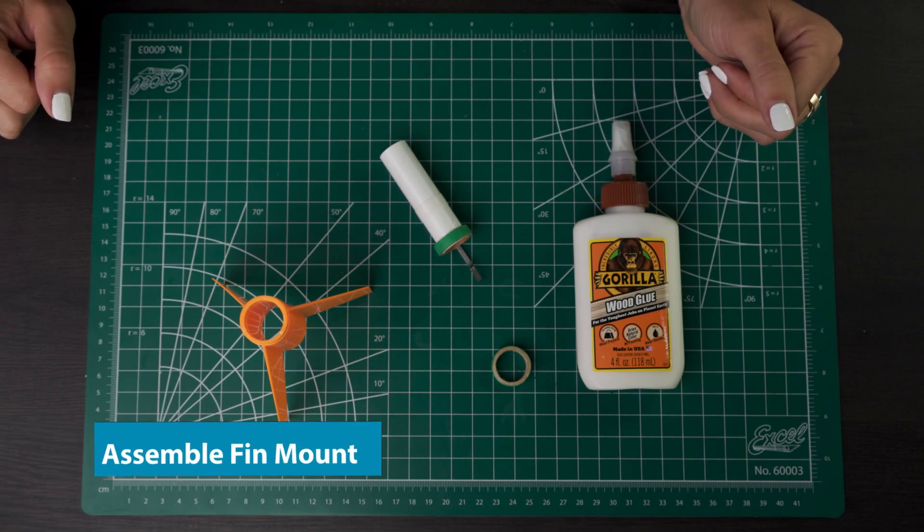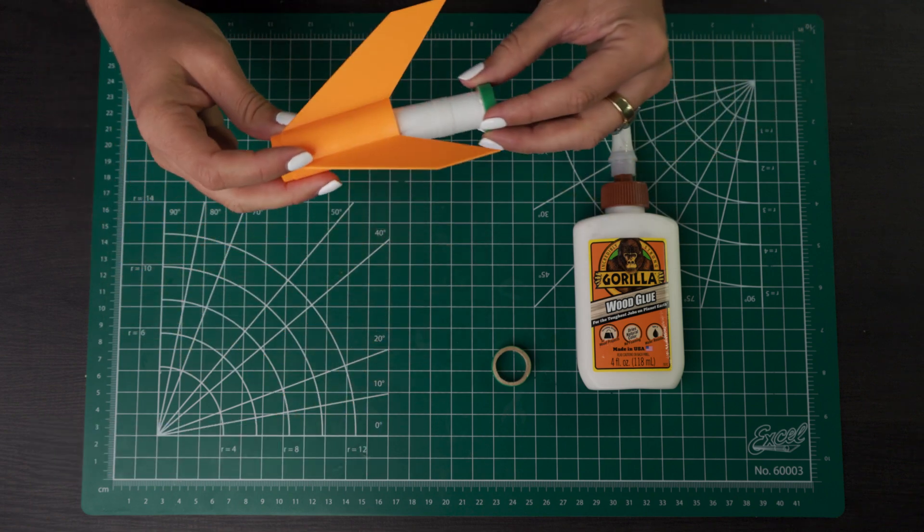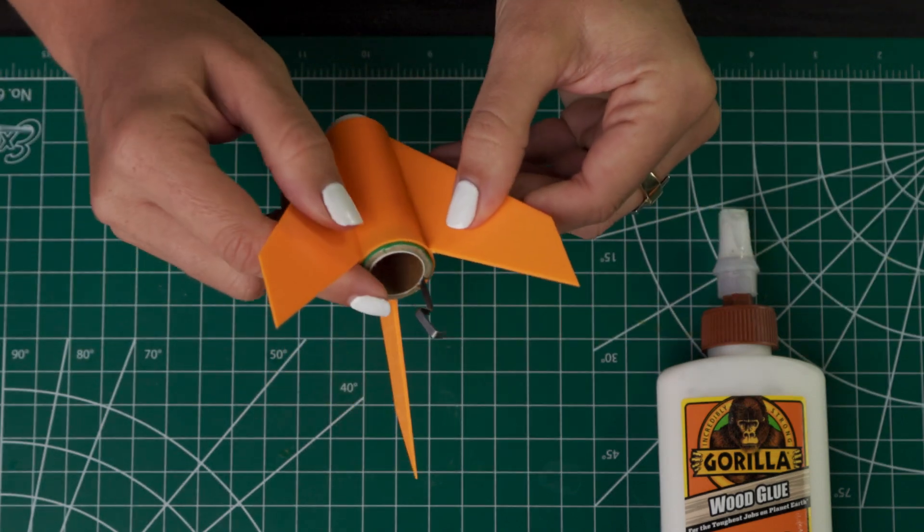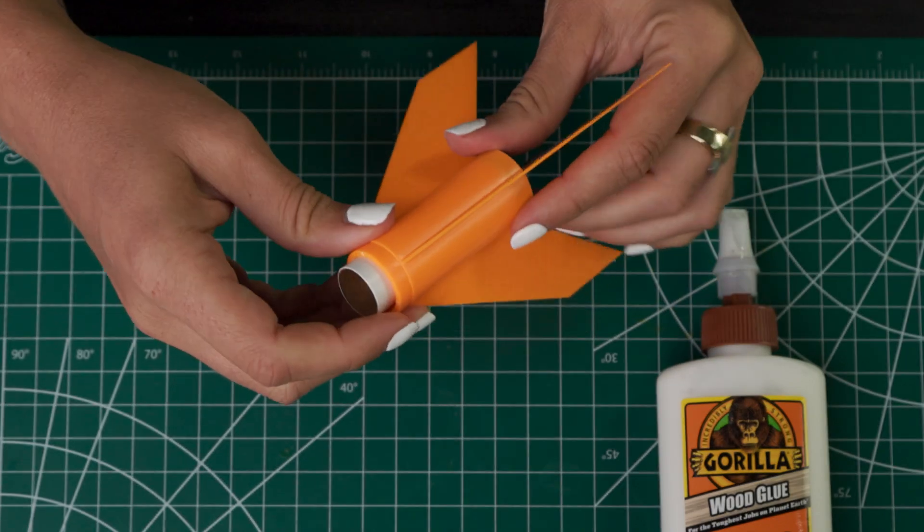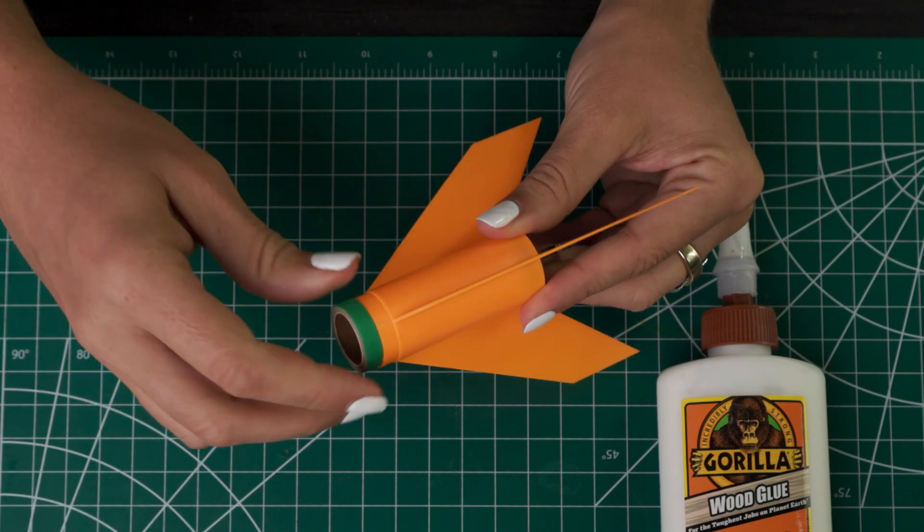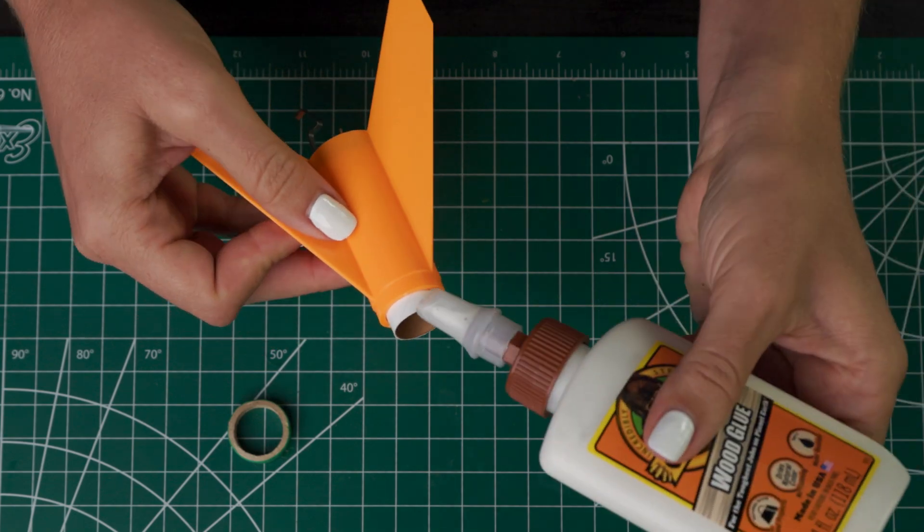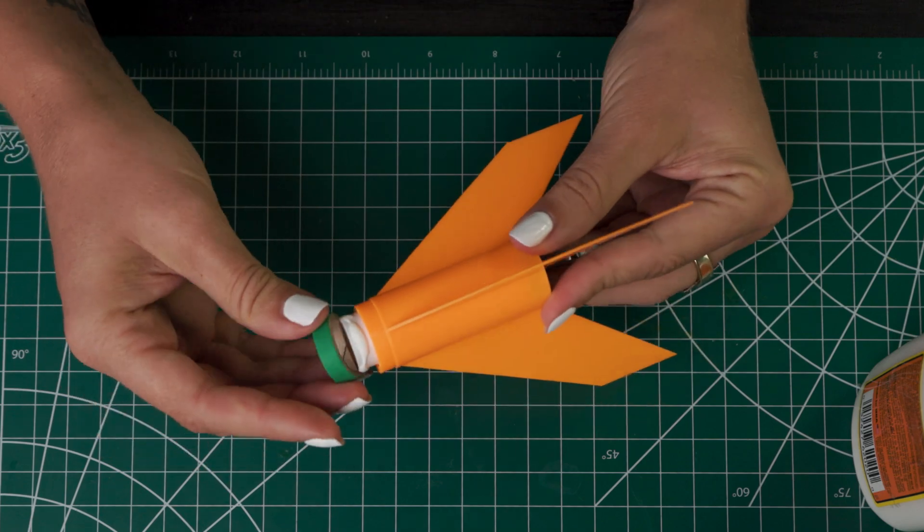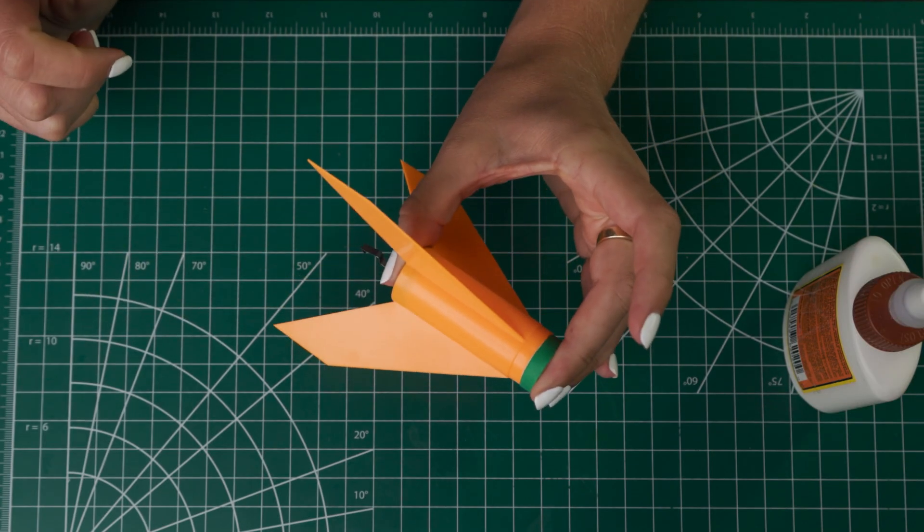Next up, we are going to assemble the fin mount. So you'll take your engine mount you just made and put it in your fin can unit. And push it up until the ends here are even. So you want it all the way in there. And then up here, we're going to take this green ring and just put it over the top here. So again, test fit first, and then we'll add glue here and put it on. Then hold this in place until it dries.